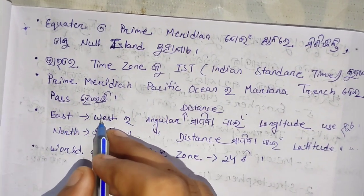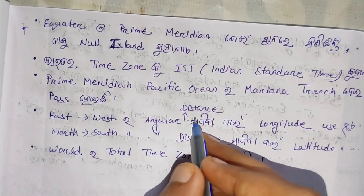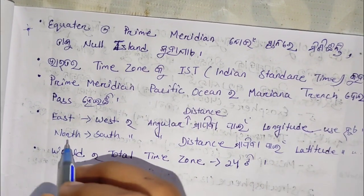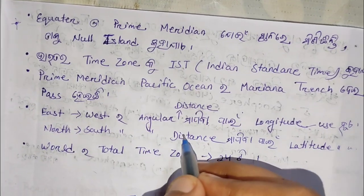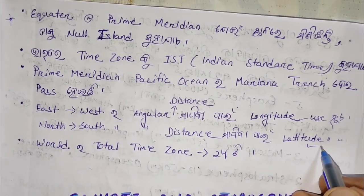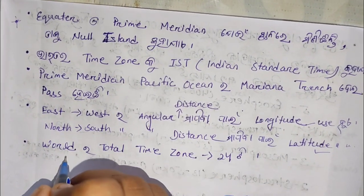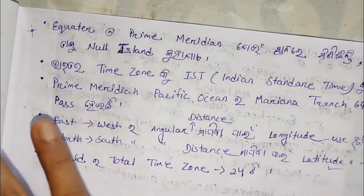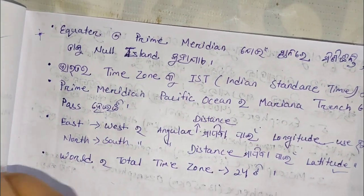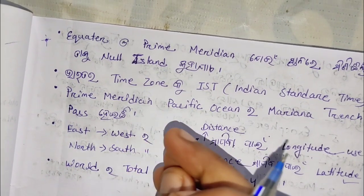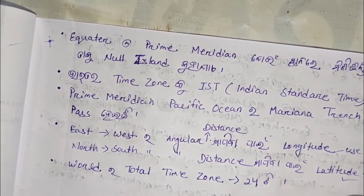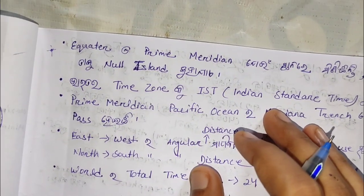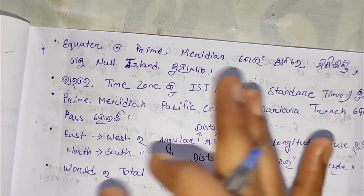If we go east or west, our angular distance will be used in the opposite direction. Similarly, north or south angular distance will be used in the opposite direction. Our world total time zones are 24 time zones. The nodes will be latitude and longitude — which is important, we will tell you. If you have a class, please comment on the video. See you in the next video. Take care. Bye bye.